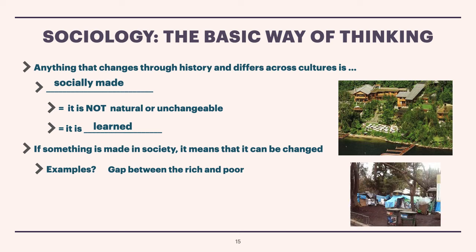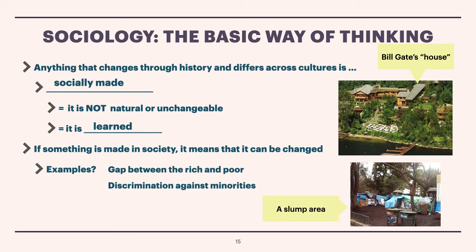And here you see a slum area where people live in shelters — not even proper houses. So that's Bill Gates' house and a slum area. And so we will spend some time to look at how come we have this big gap between the rich and the poor in society, and what sociologists say about that. Other examples include discrimination against minorities. Again, it is something that is made in society — there is nothing about the minorities themselves that makes them deserve any type of discrimination. And so long as discrimination is made in society, we can also change and reduce and get rid of discrimination. And more generally, social norms change and we can change social norms as well, even though we are affected by social norms.